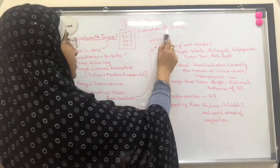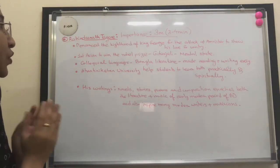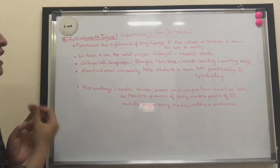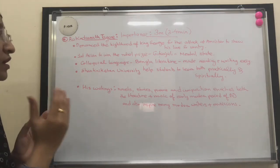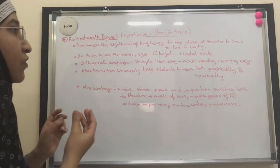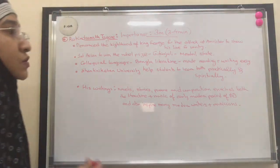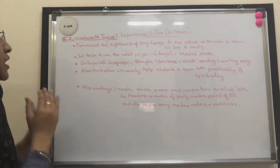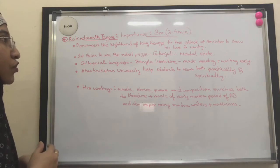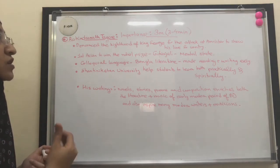Now we focus on the importance part. As mentioned, I didn't include all points under life and work because I kept a few for the importance section. The importance question is worth 3 marks and should be answered within 3 to 4 minutes. These are the remaining informations I felt were easiest to express the importance of Rabindranath Tagore.